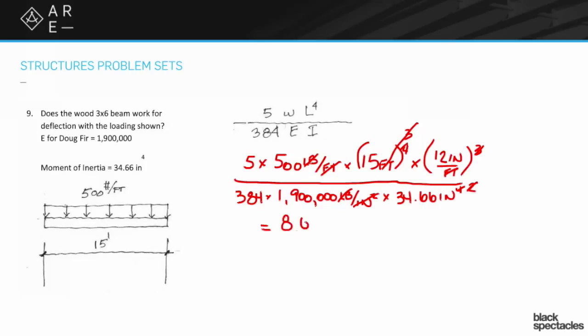So when you do the math, you get 8.64 inches, which is not a lovely number. Let's think about that for a second. This is a 15-foot 3x6 wood beam, and its deflection is 8.64 inches—that's almost nine inches. That's way too much deflection.